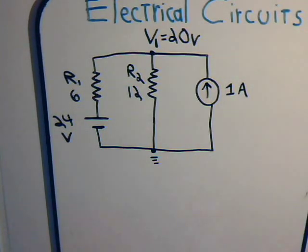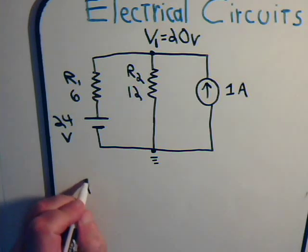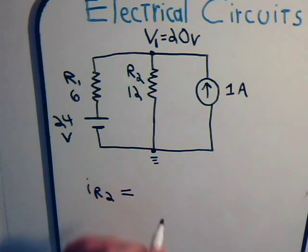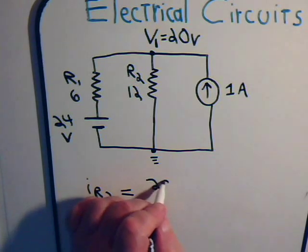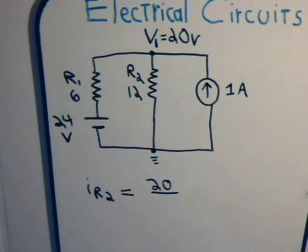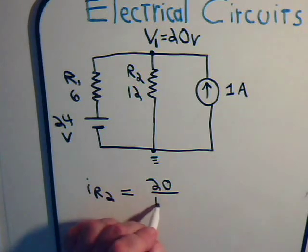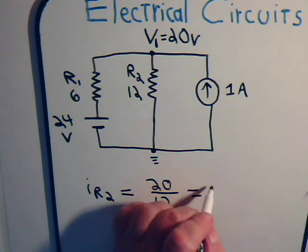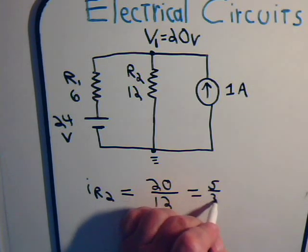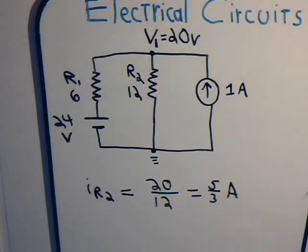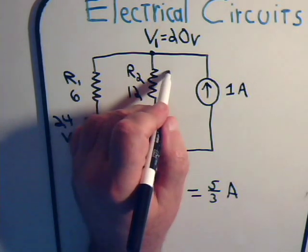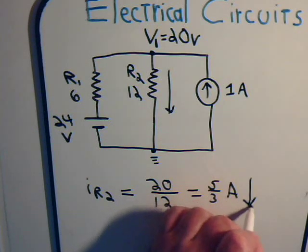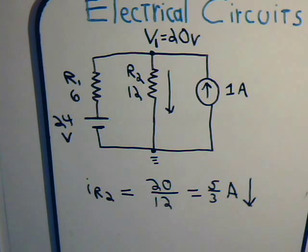So, the amount of current flowing through resistor R2, that is going to equal 20 divided by 12, or that would be 5 thirds amps, and this current would be going downward.